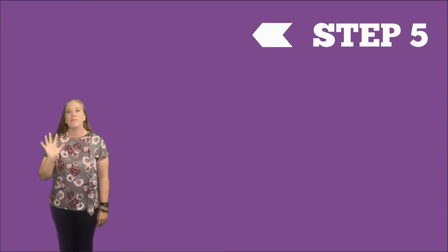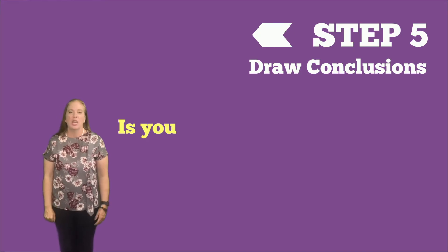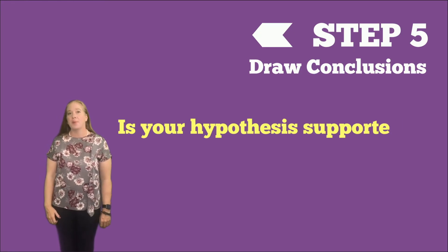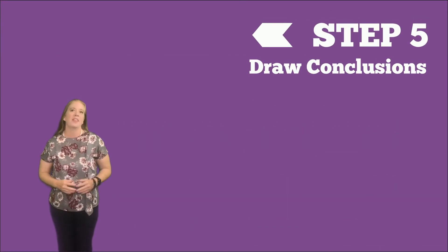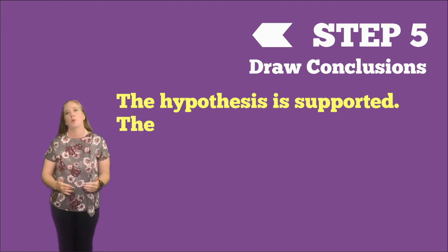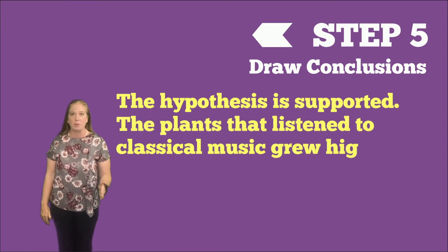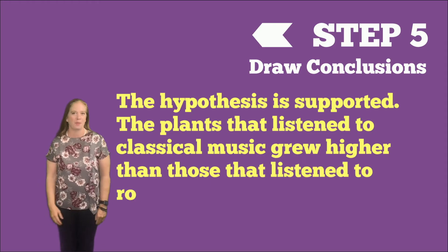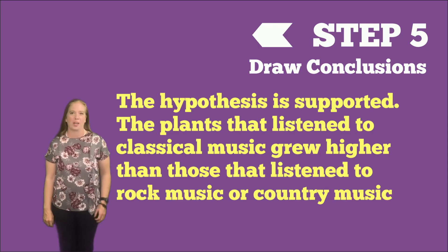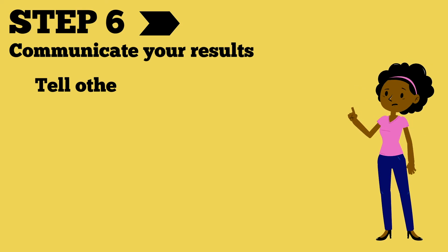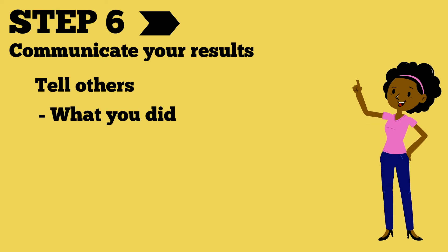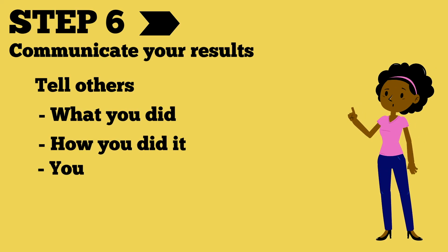Step five: drawing conclusions. You're figuring out if your hypothesis is supported or not supported from the data. In this experiment, the hypothesis is supported — the plants that listen to classical music grew higher than the plants that listen to country music or rock music. Finally, step six: here's where you need to communicate your results. Tell others what you did, how you did it, and your results.